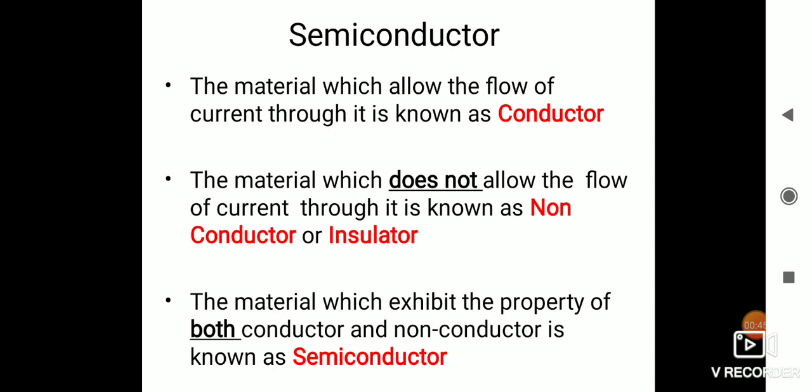Opposite of that is a non-conductor. The material which does not allow the flow of current through it is known as a non-conductor, also known as an insulator. For example, rubber, plastic, glass, fiber, wood — all these are insulators, that is non-conductors.